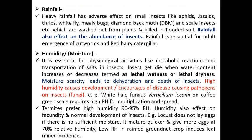Humidity or moisture is essential for physiological activity like metabolic reactions and transportation of salts in insects. Insects die when water content increases or decreases — there may be lethal wetness and lethal dryness. Moisture scarcity leads to dehydration and death. High humidity encourages disease-causing pathogens such as fungi on insects. For example, the white hyal fungus Verticillium lecanii on coffee green scale requires high relative humidity for multiplication and spread. Termites require 90–95% relative humidity for their emergence. Locusts do not lay eggs if there is insufficient moisture.